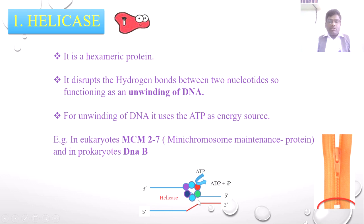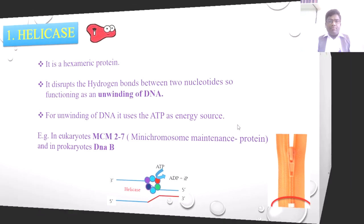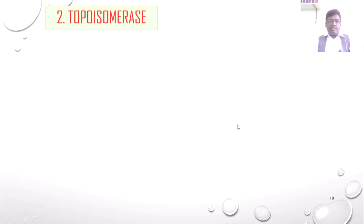We get the fork-like structure. In CSIR NET, questions may ask about the function of helicase — unwinding — and sometimes about ATP or NADP usage.